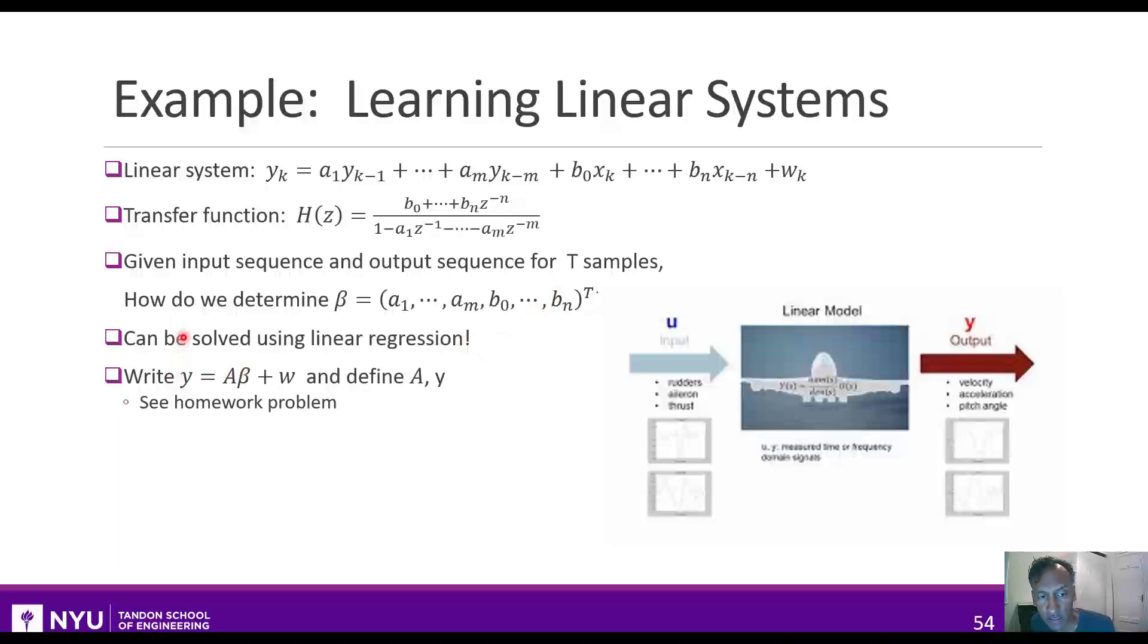Turns out, you can actually solve this just using linear regression. You can, given some training data, you can write the predicted values as some transform matrix A times these coefficient vectors. You just have to organize this matrix A with the values from y and x correctly. And they're going to do that in your homework. So I won't go over it right now.